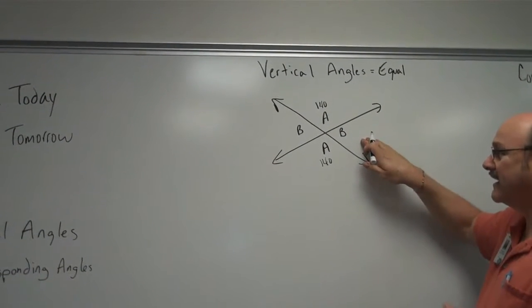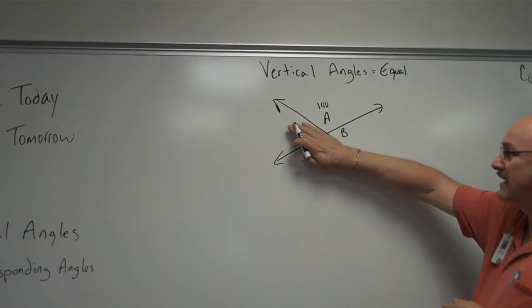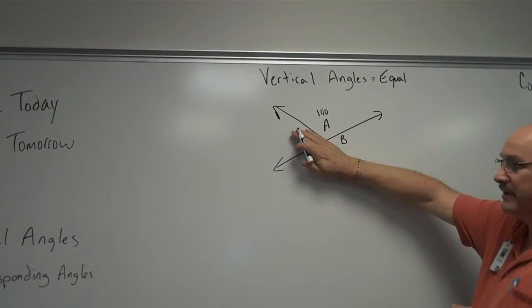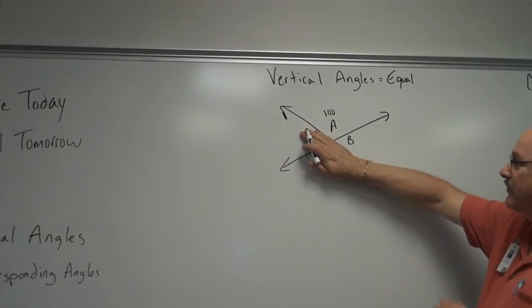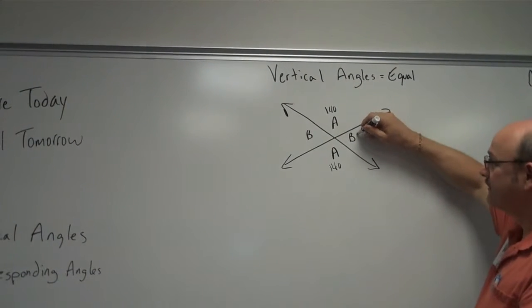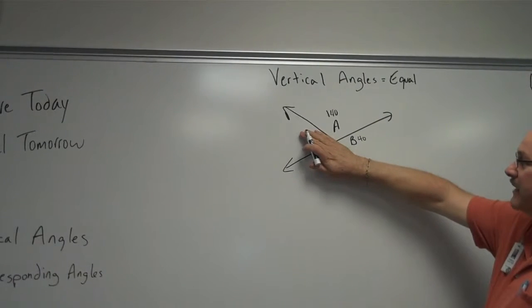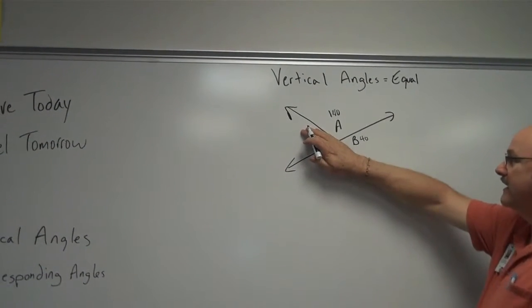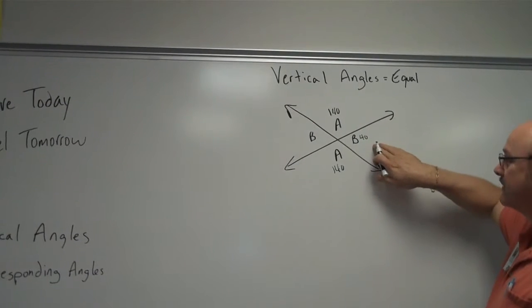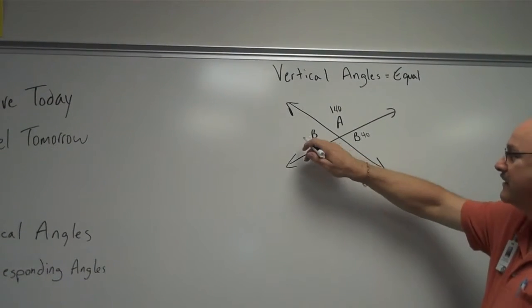How would I find that? Well, from our previous lesson, we said a straight line is supplementary, 180 degrees. So if that angle is 140, this one must be 40 because together they'd make 180. They would be supplementary, 180 degrees making a straight line. So this one is 40. If this one's 40, this one's 40.